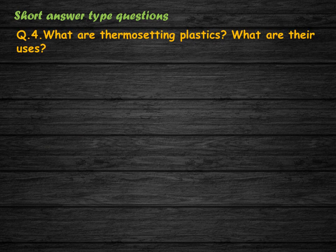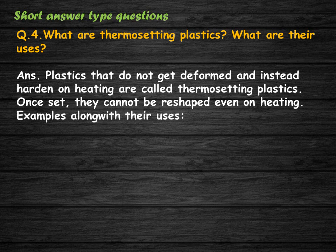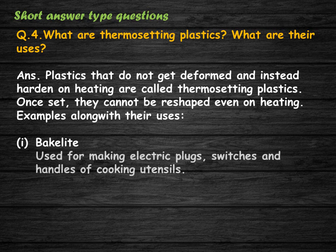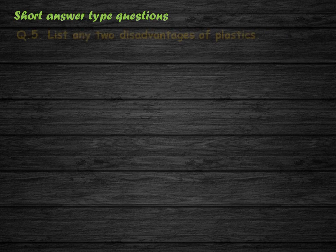What are thermosetting plastics and what are their uses? Plastics that do not get deformed and instead harden on heating are called thermosetting plastics. Once set, they cannot be reshaped even on heating. Examples: Bakelite — used for making electric plugs, switches, and handles of cooking utensils; melamine — used to make floor tiles, whiteboards, and fire-resistant fabrics.